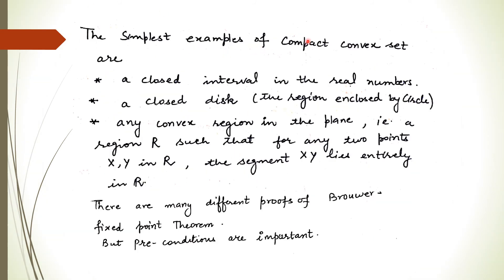The simplest examples of compact convex sets are: a closed interval in one dimension, a closed disk in two dimensions (the region enclosed by a circle, including the boundary), and any convex region in the plane where if you take any two points, the segment between them lies entirely within the set.